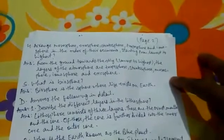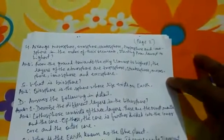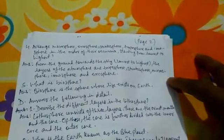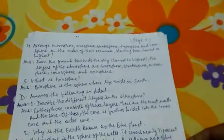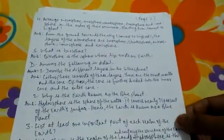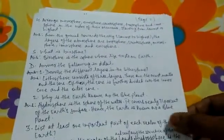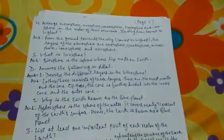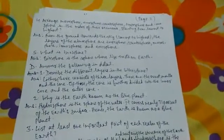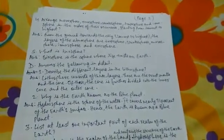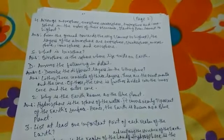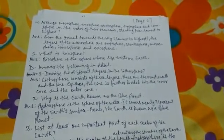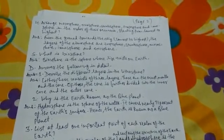Question 5: What is Biosphere? Biosphere is the sphere where life exists on Earth. Now let's see Question D: Answer the following in detail. Question 1: Describe the different layers in the lithosphere. Lithosphere consists of 3 layers: the crust, mantle and the core.